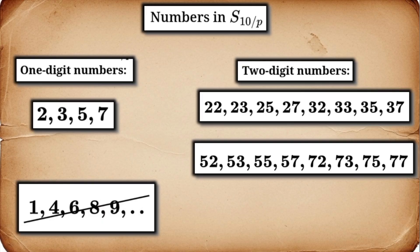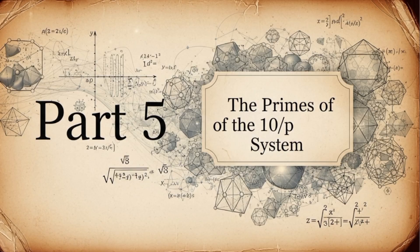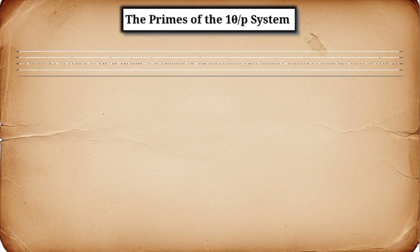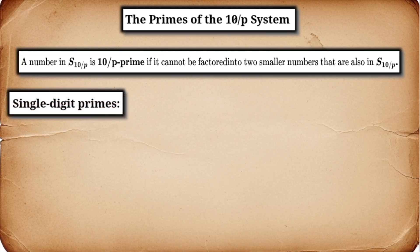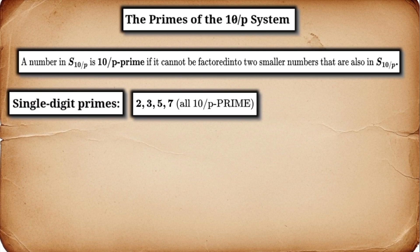Now, let's apply our same new definition of primality to the 10 over P system. A number in S10 over P is 10 over P prime if it can't be factored into two smaller numbers that are also in S10 over P. Let's go through our single-digit numbers: 2, 3, 5, 7. In standard math, these are prime. Can we factor them within S10 over P? No, because we'd need to use the number 1, which isn't here. So, they are all 10 over P primes. A good start.